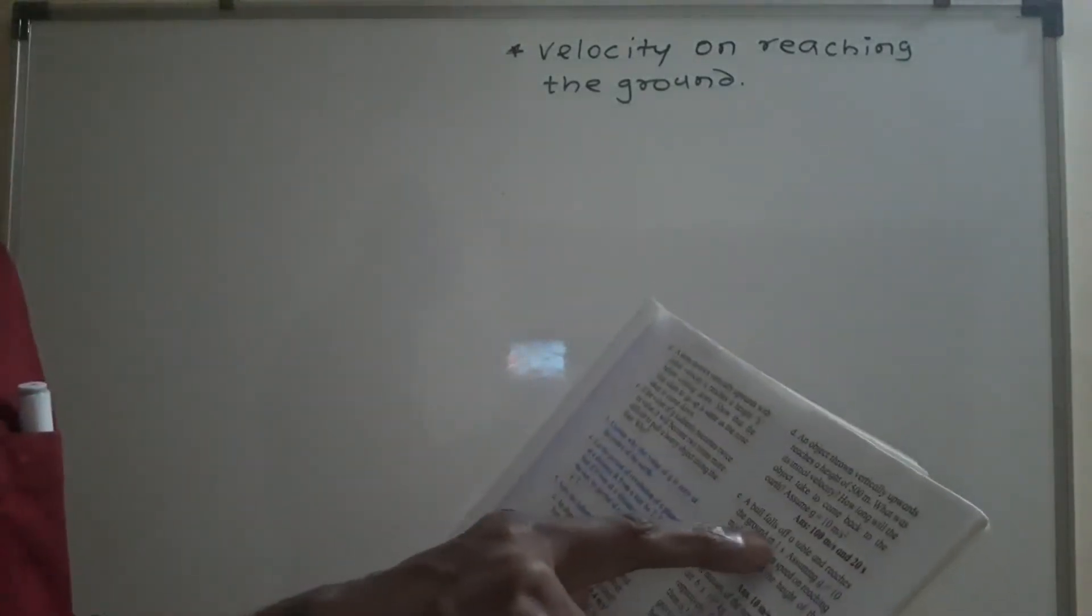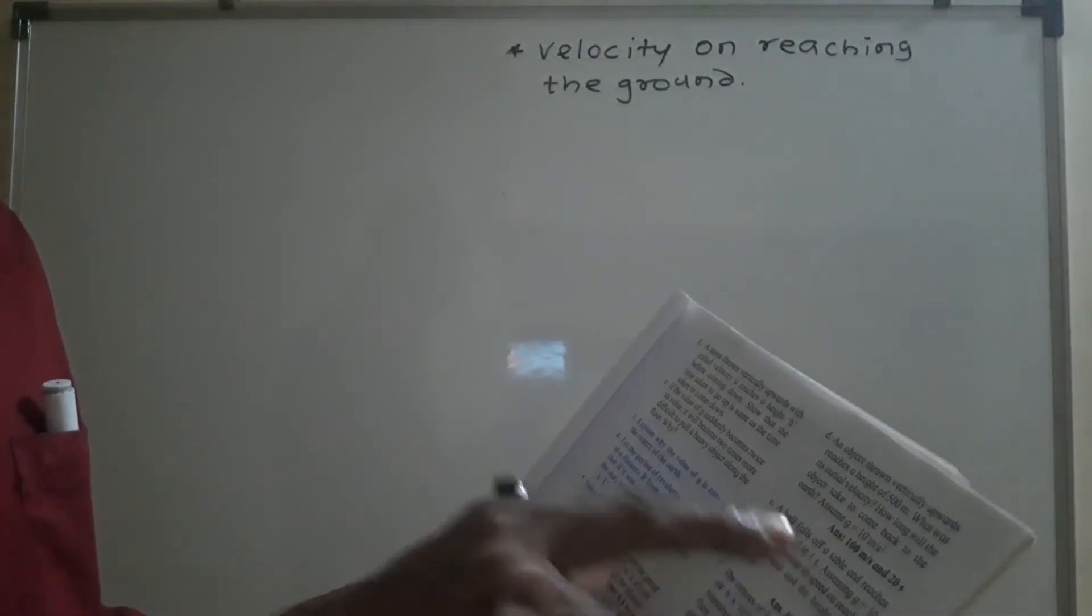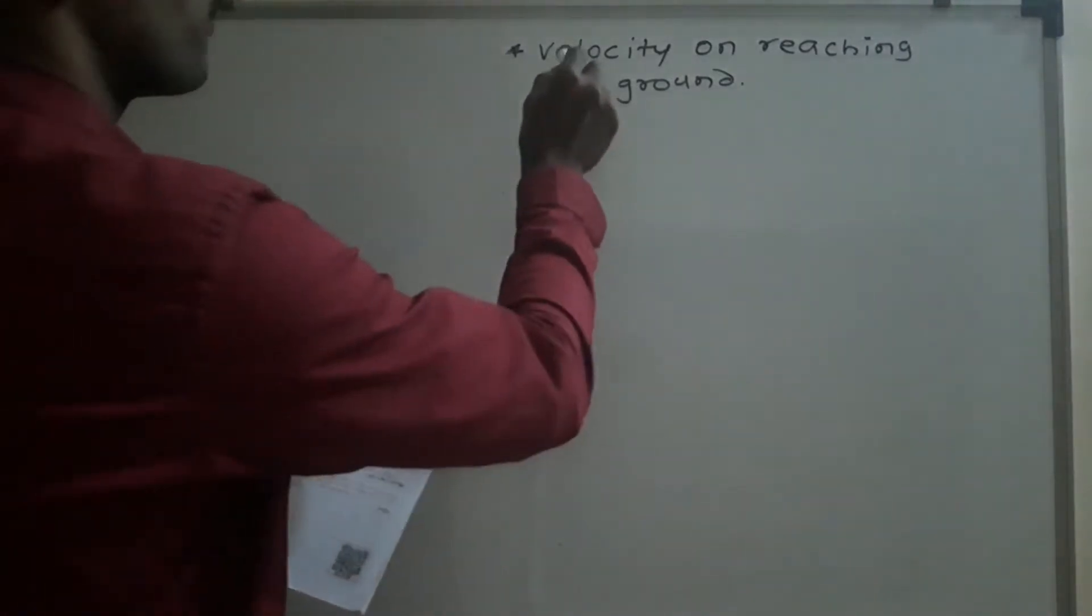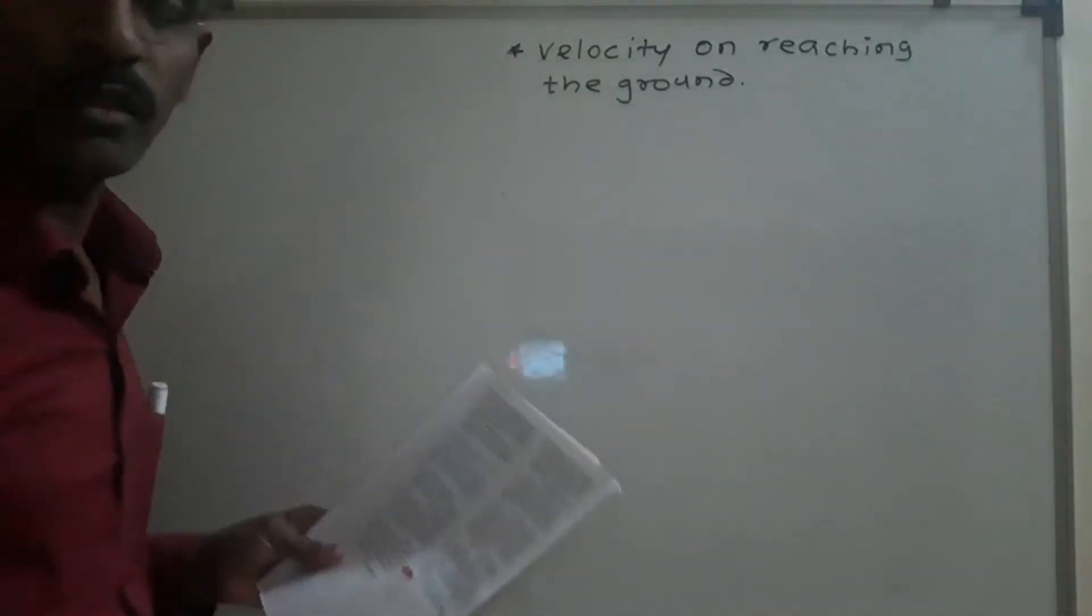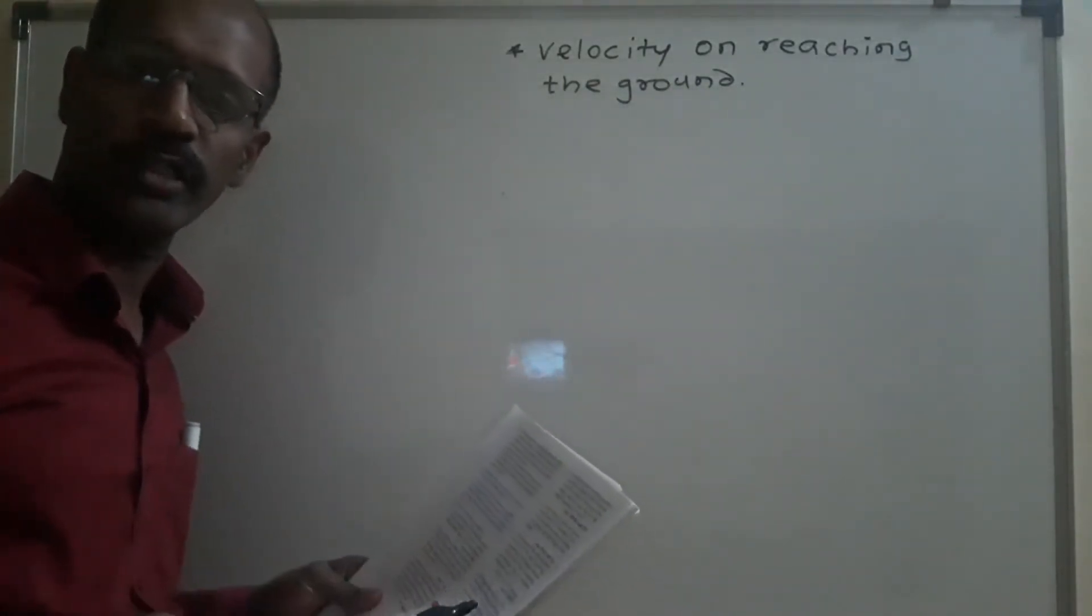A ball falls off a table and reaches the ground in one second. We need to find the velocity on reaching the ground, that is we will find out final velocity v.